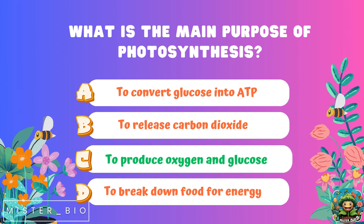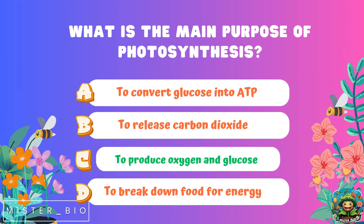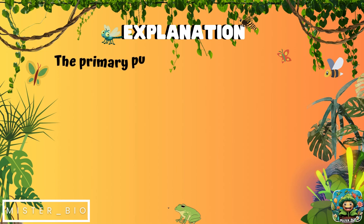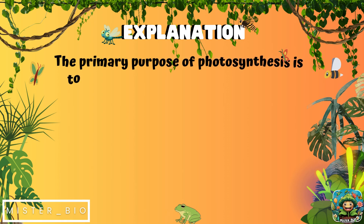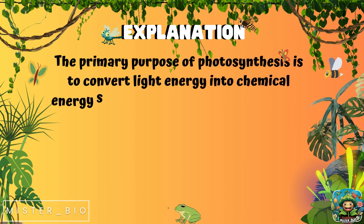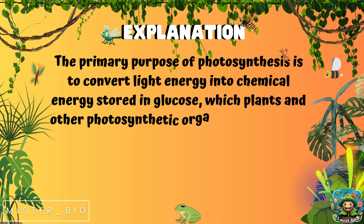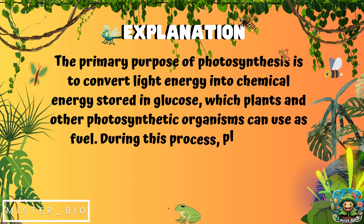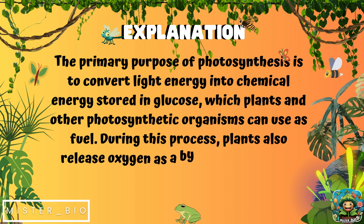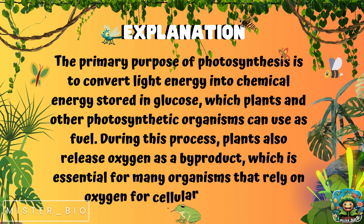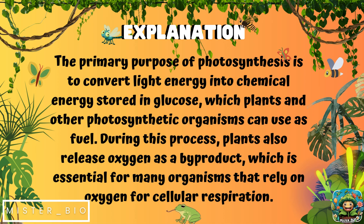The answer is C, to produce oxygen and glucose. The primary purpose of photosynthesis is to convert light energy into chemical energy stored in glucose, which plants and other photosynthetic organisms can use as a fuel. During this process, plants also release oxygen as a byproduct, which is essential for many organisms that rely on oxygen for cellular respiration.